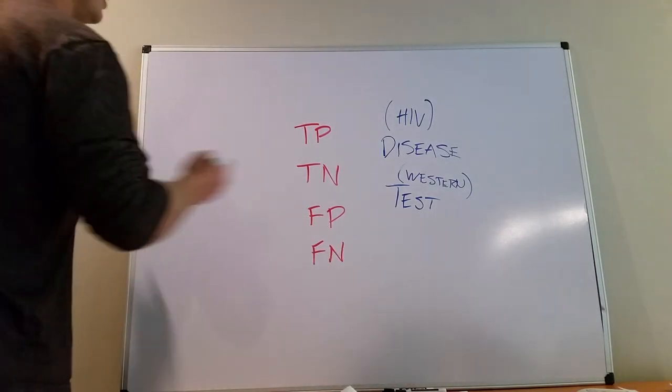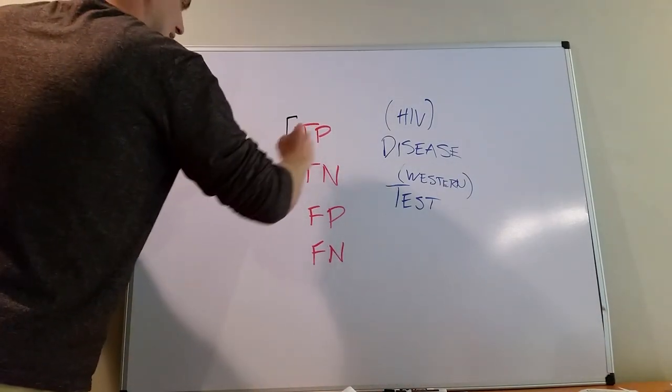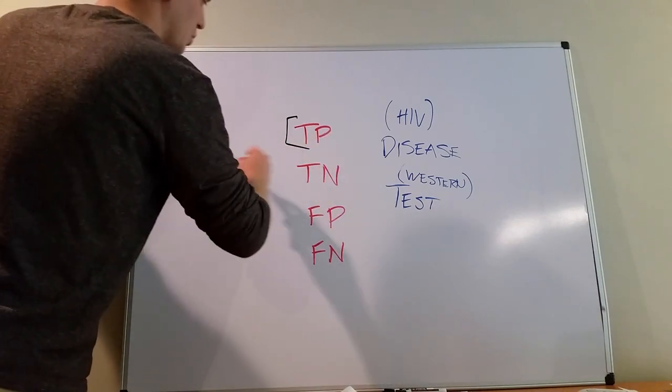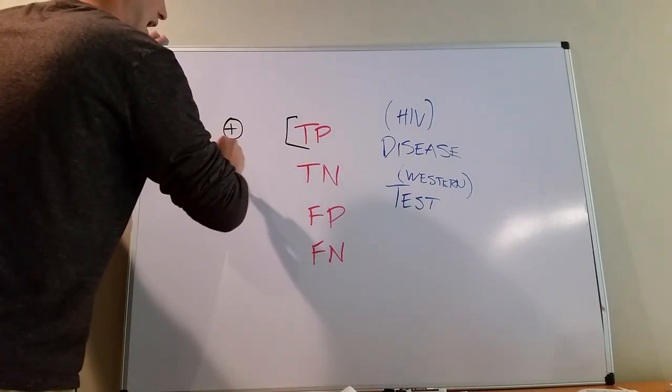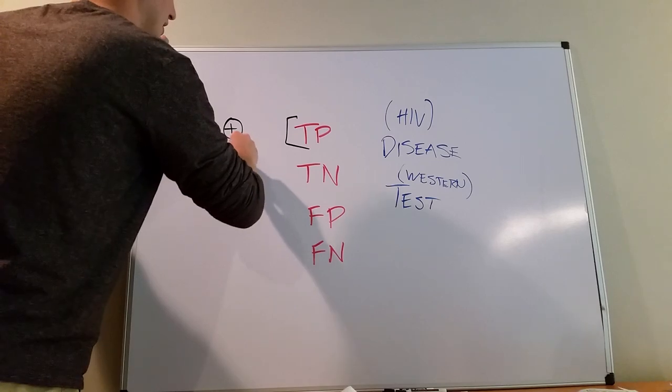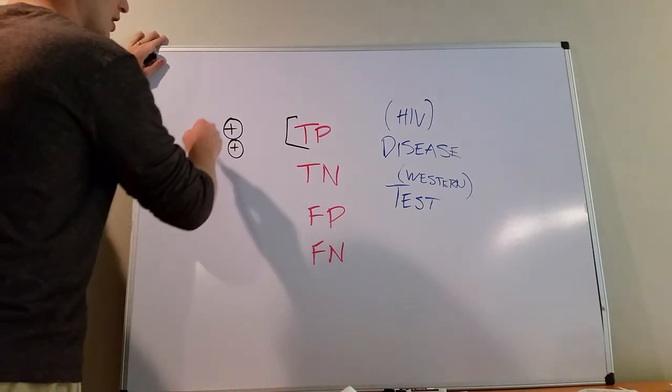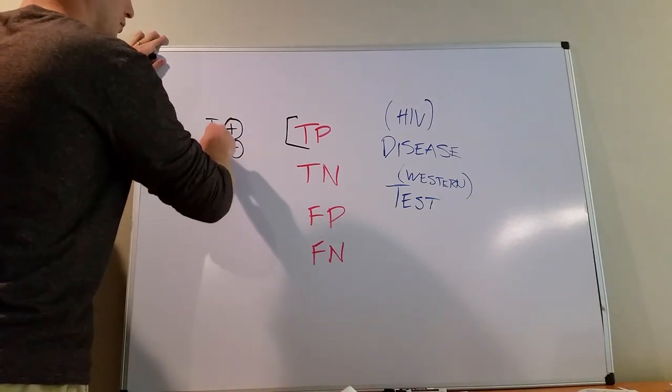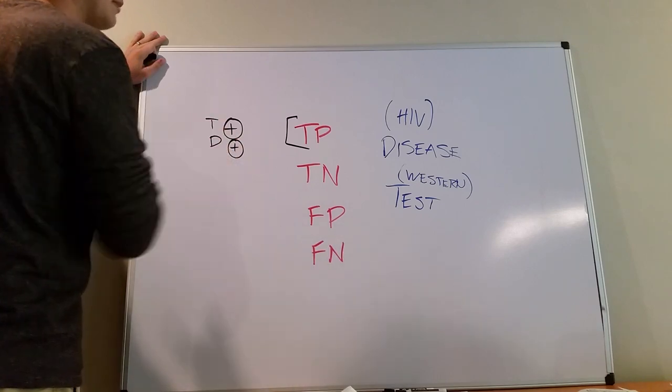What is a true positive? A true positive is when your test gives you a positive result and the person actually has the disease. So it's almost like saying, was the test positive? Yes. Was the disease actually there? Yes. It's like double positive.